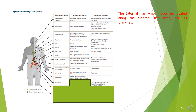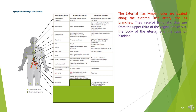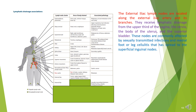The external iliac lymph nodes are located along the external iliac artery and its branches. They receive lymphatic drainage from the upper third of the vagina, the cervix, the body of the uterus, and the superior bladder. These nodes are commonly affected by sexually transmitted infections and medial foot or leg cellulitis that has spread to the superficial inguinal nodes.